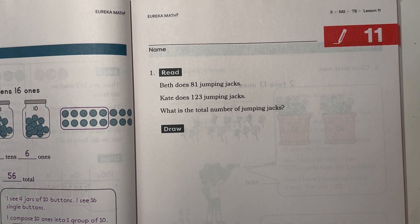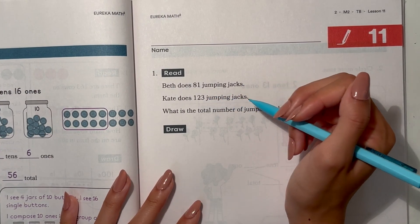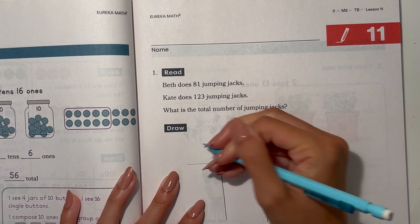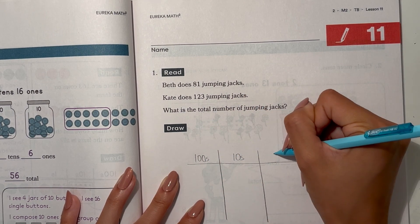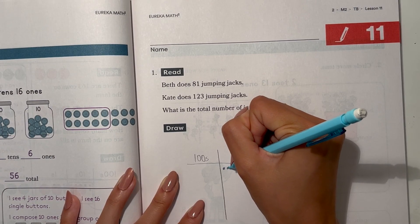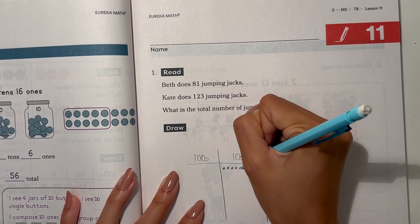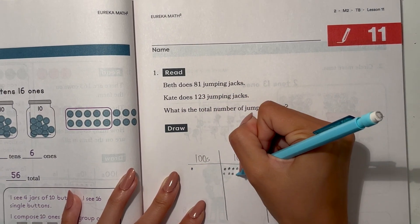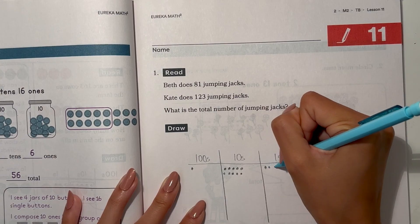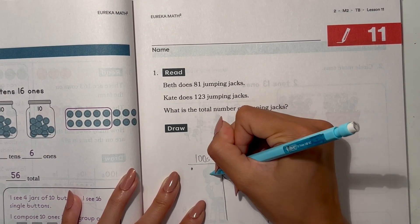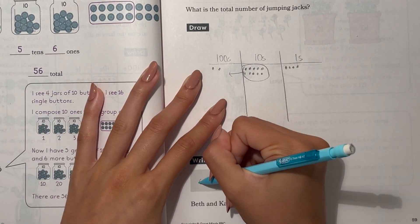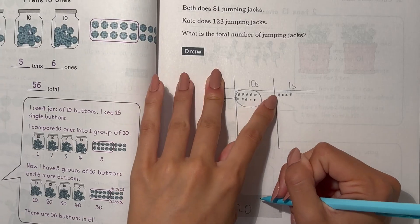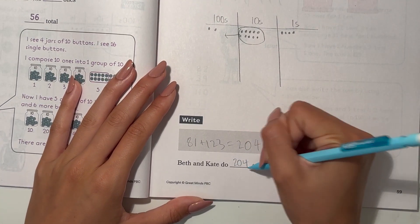Lesson 11. Beth does 81 jumping jacks. Kate does 123 jumping jacks. What's the total number of jumping jacks? Let's add with our place value chart. So it's hundreds, tens, ones. Beth does 81. And Kate does 123. So we can regroup the tens into 100. So now our total 81 plus 123, that's 200, 0 tens left over, and 4 ones. So Beth and Kate do 204 total jumping jacks.